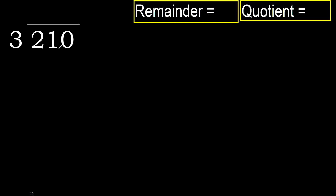210 divided by 3. 2 is less, therefore next. 21 is not less, therefore with 21.